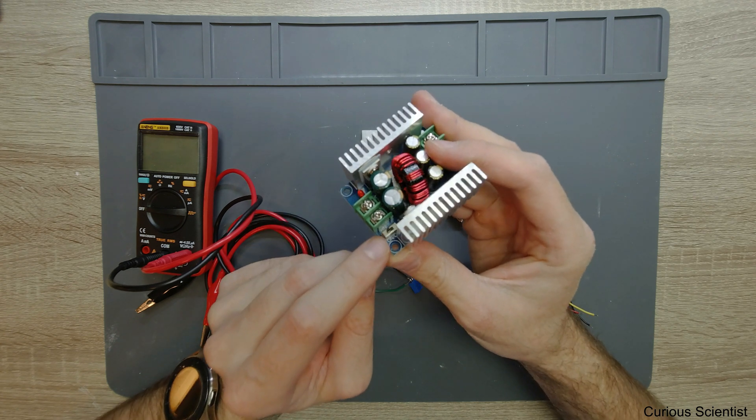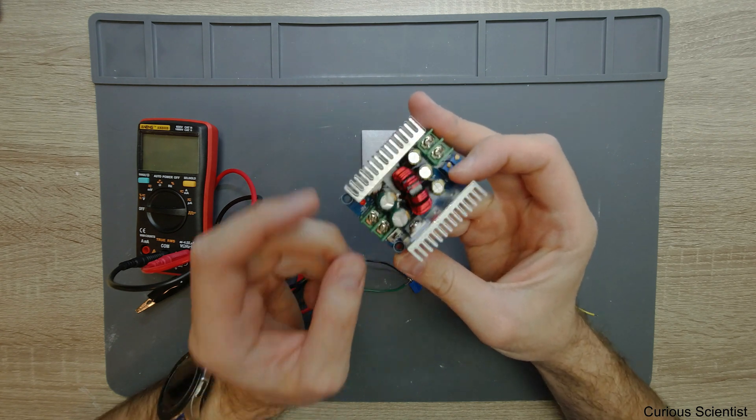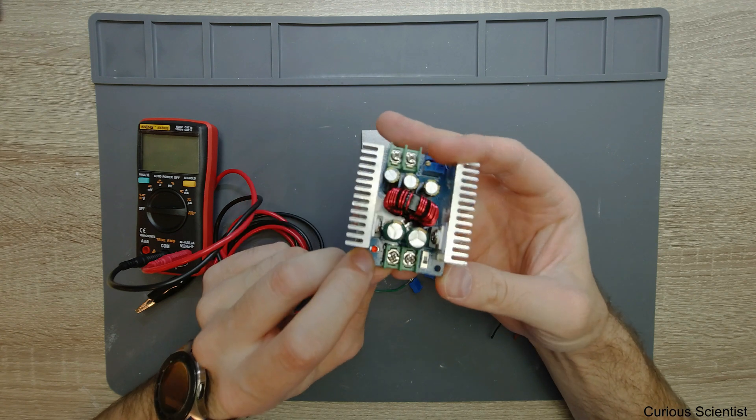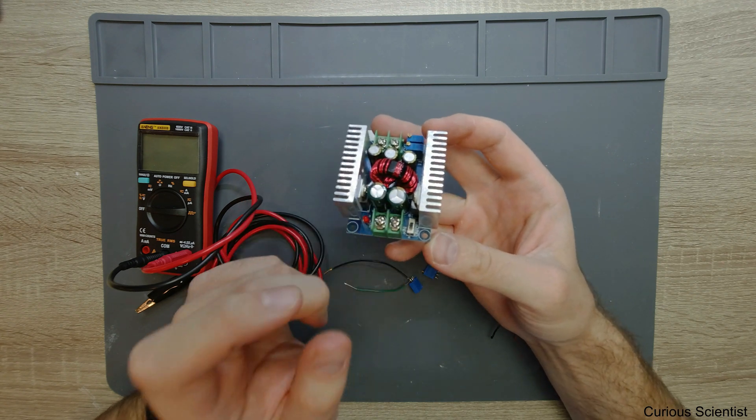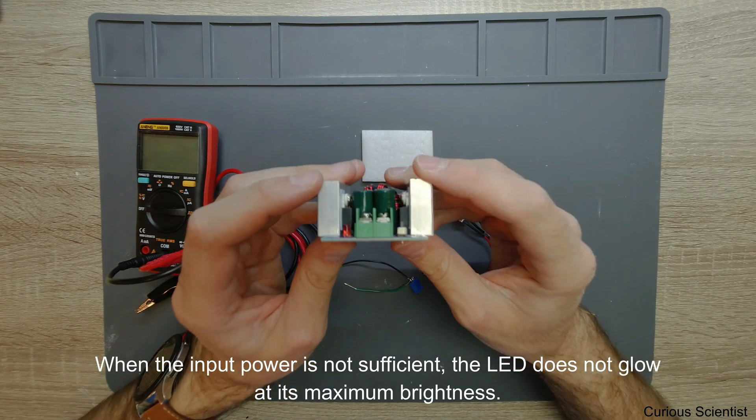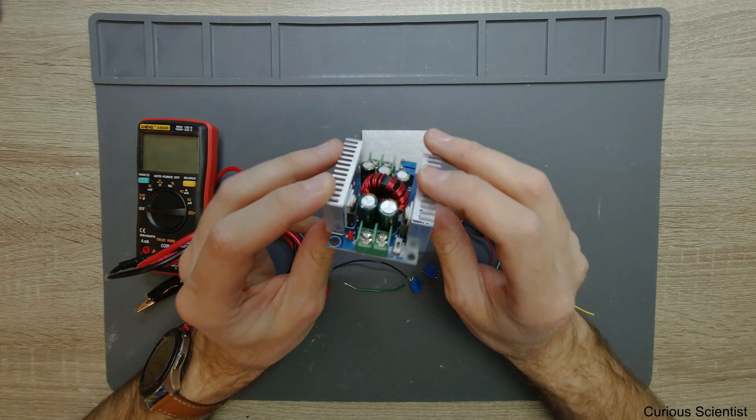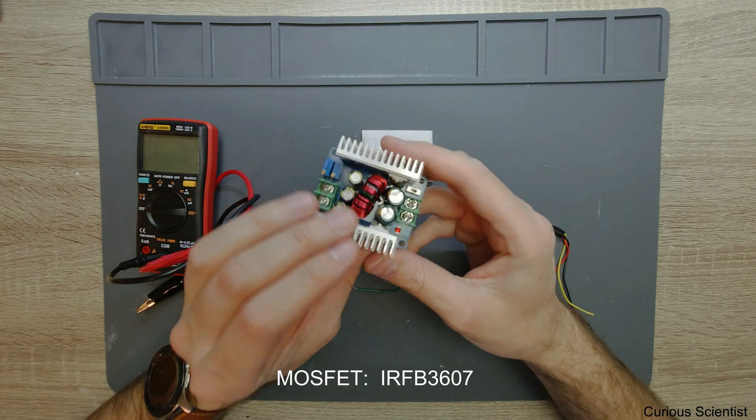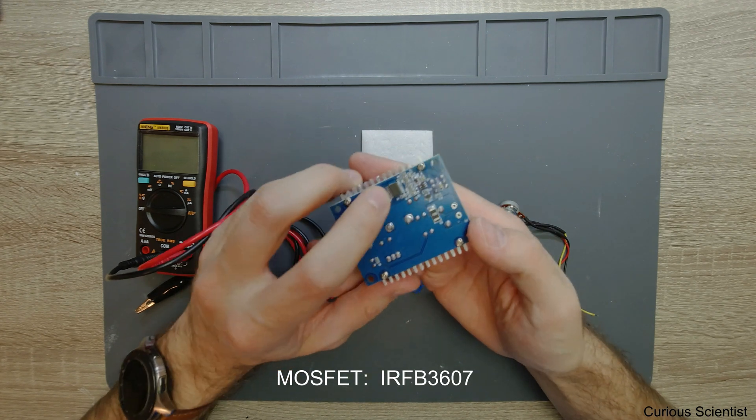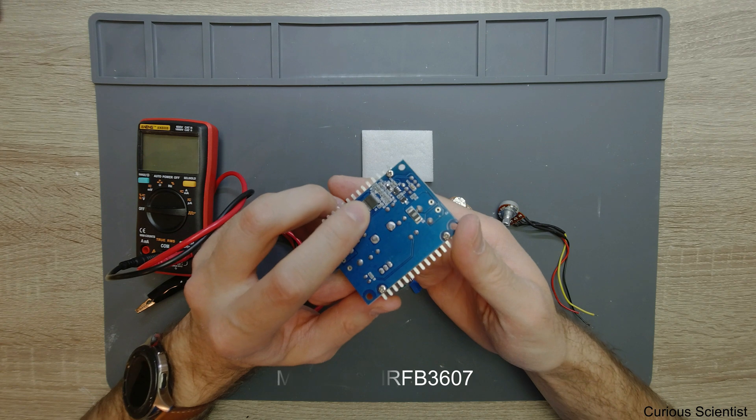There's also a switch so you can switch this thing on and off, and there's an LED light which indicates that this thing works. You can see between the heat sinks on each side you have a MOSFET. I cannot really read the type of it, and the buck converter is basically this chip on the bottom.